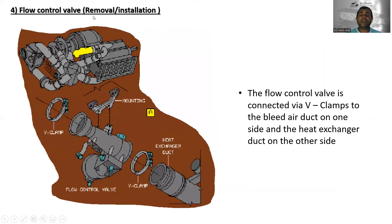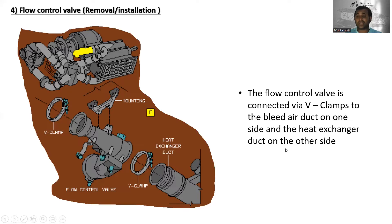For the flow control valve removal and installation: the flow control valve is connected via V-clamps to the bleed air duct on one side and the heat exchanger duct on the other side.